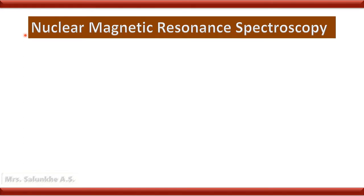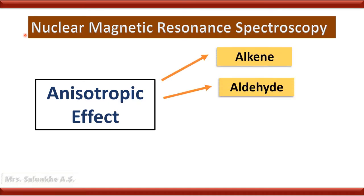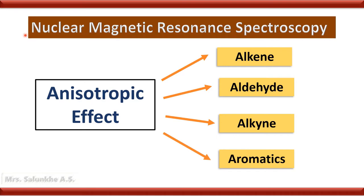Welcome to the lecture series on Nuclear Magnetic Resonance Spectroscopy. In this video, we are going to learn about the anisotropic effect in case of alkenes, aldehydes, alkynes, and aromatic compounds. Anisotropic effect is very important while studying chemical shift values of certain groups of protons.